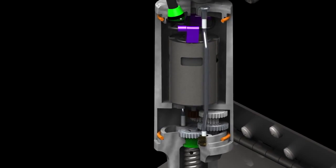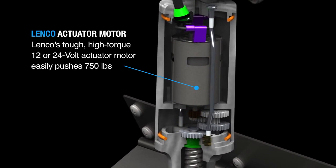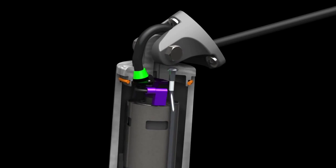Lenko's tough, high-torque, 12 or 24-volt actuator motor easily pushes 750 pounds.